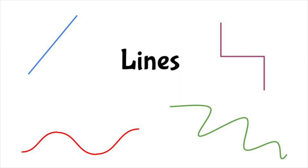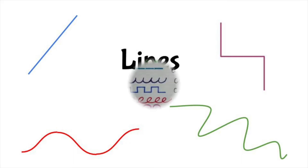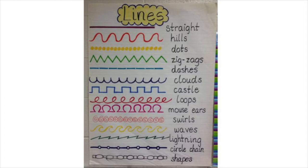Today we are going to talk about lines and create art that has lines in it. There are all kinds of lines. You can see lots of different types of lines here: straight, wavy hills, zigzag, bumpy clouds, castle lines, curly loops, swirls — all kinds of different lines.